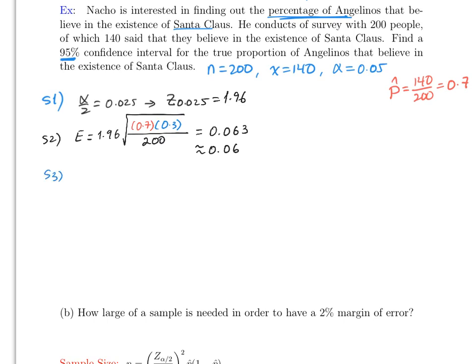Then step three is p hat plus or minus E, which in our case p hat remember is 0.7, so this is plus or minus 0.06. Then write the answer in this form, so p is between 0.76, 70 plus 6 is 76, and 70 minus 6 is 0.64.